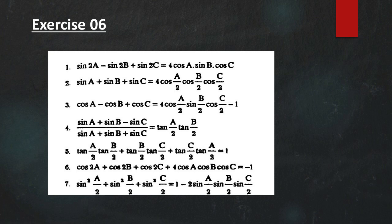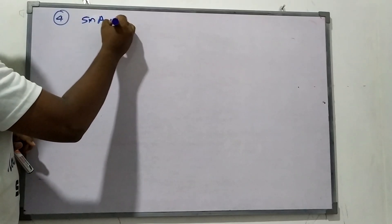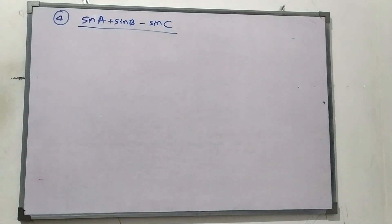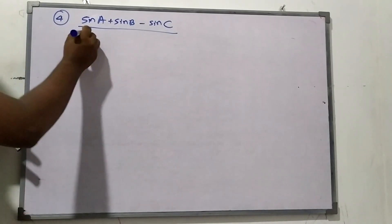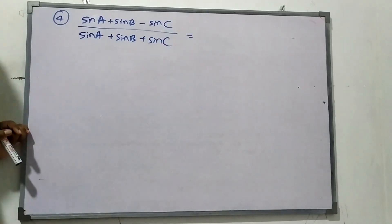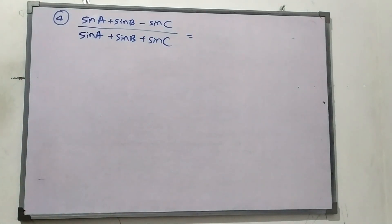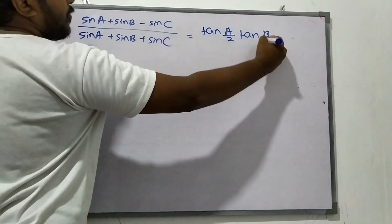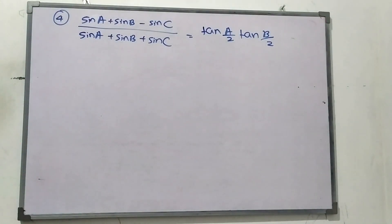Okay children, I gave you two homework questions. The first one is the fourth question: sine A plus sine B minus sine C over sine A plus sine B plus sine C equals tan A by 2 times tan B by 2. So first I'm going to start from the left-hand side.